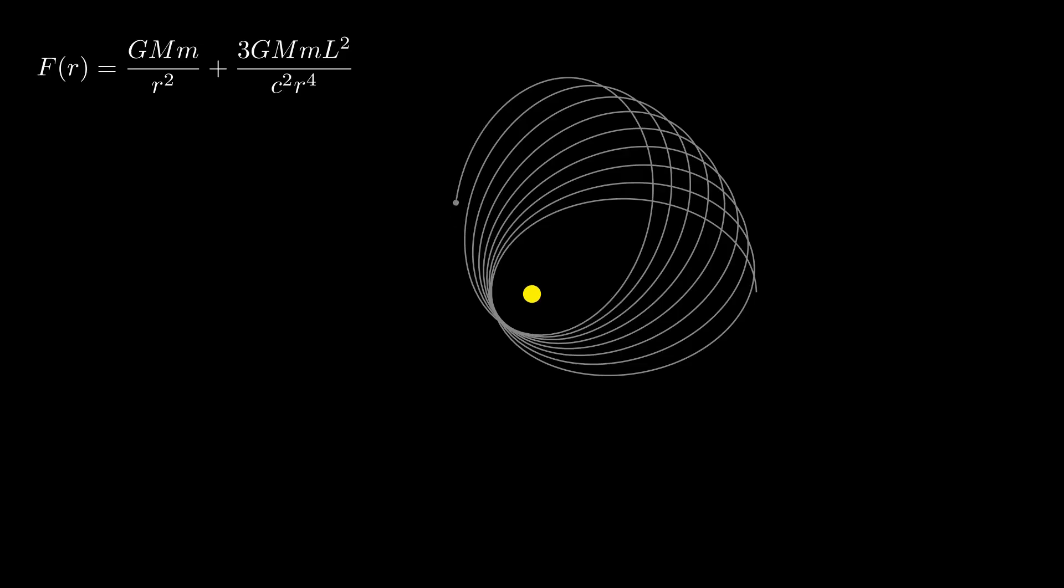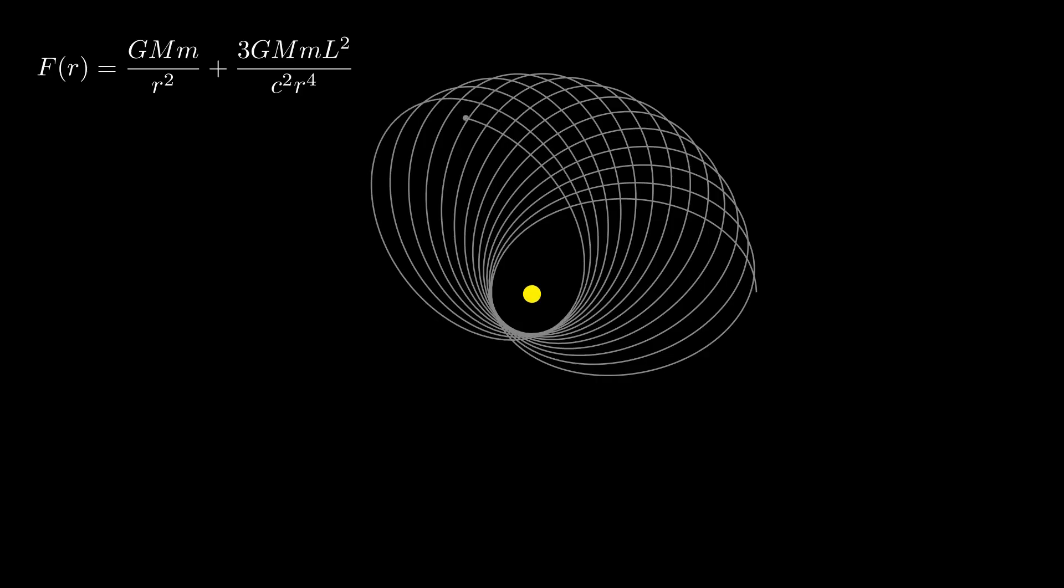We assumed the planet Mercury is a test particle, which means that it has no effect on the gravitational field itself. Of course, in reality, this is never true. The two bodies in isolation will orbit their center of mass. If we included all the other planets, the center of mass of the system would lie outside the sun. The other planets would also have their own gravitational influence on Mercury as well.